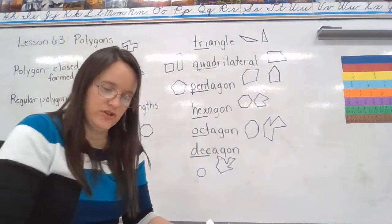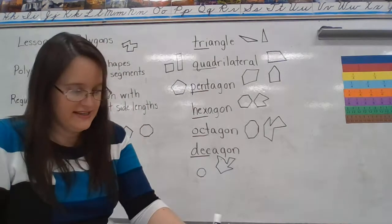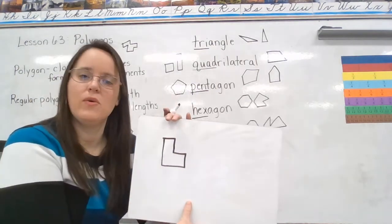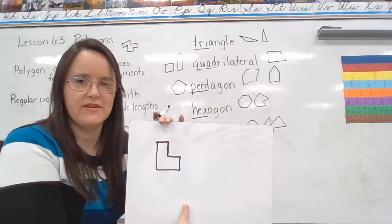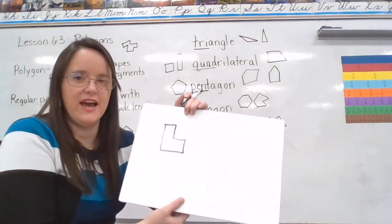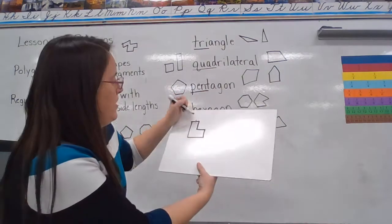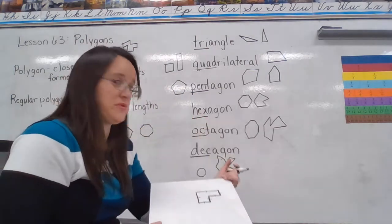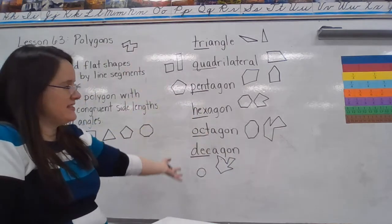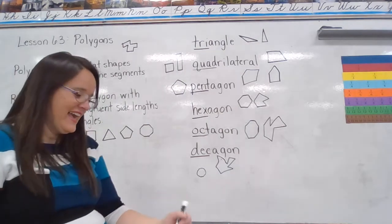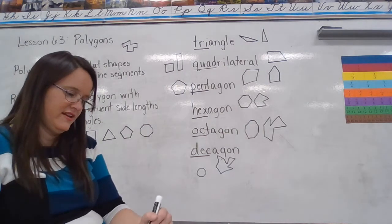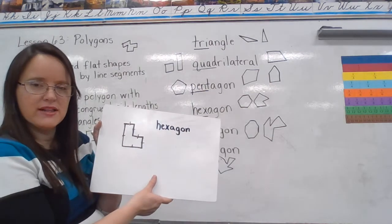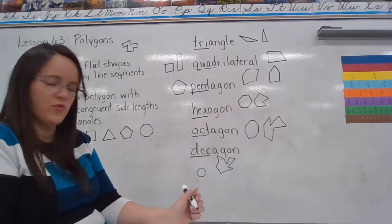The next picture kind of looks like an L. Count the sides: one, two, three, four, five, six. It has six sides, which makes it a hexagon. And what kind of angles are in this polygon? It also has right angles.